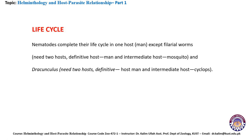In the case of nematodes, they complete their life cycle in one host, which is man — except filarial worms, which need two hosts: the definitive host is man and the intermediate host is the mosquito. And Rhabdonema, which also needs two hosts: the definitive host is man and the intermediate host is Cyclops.